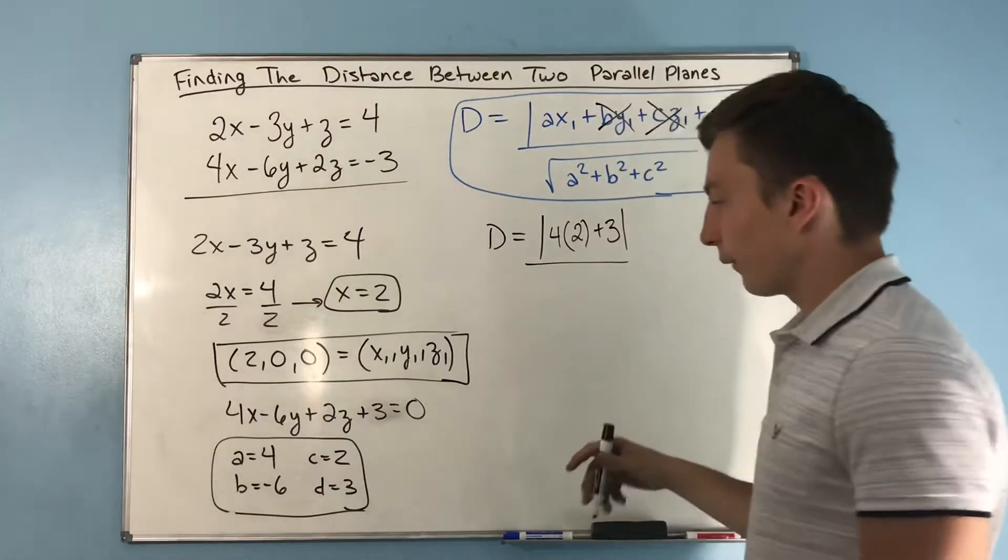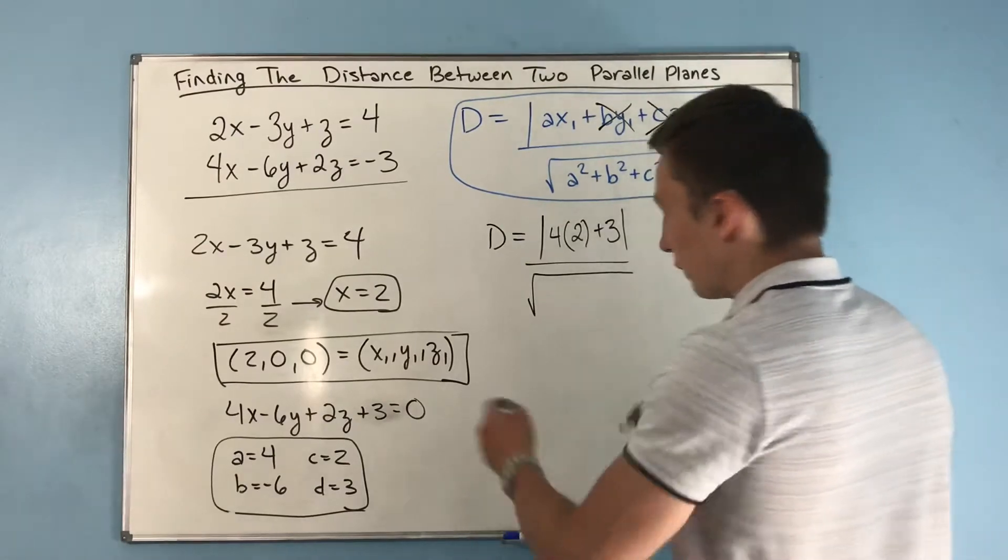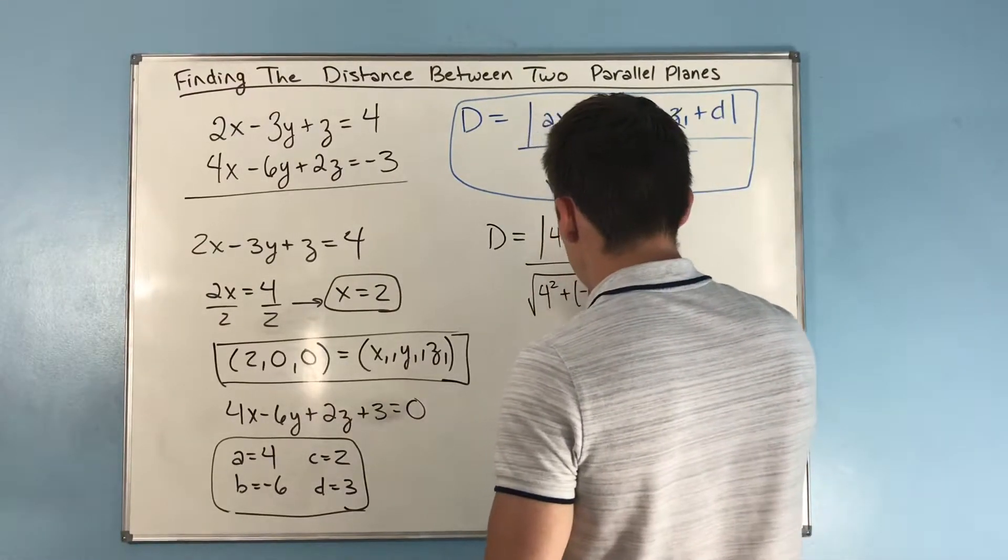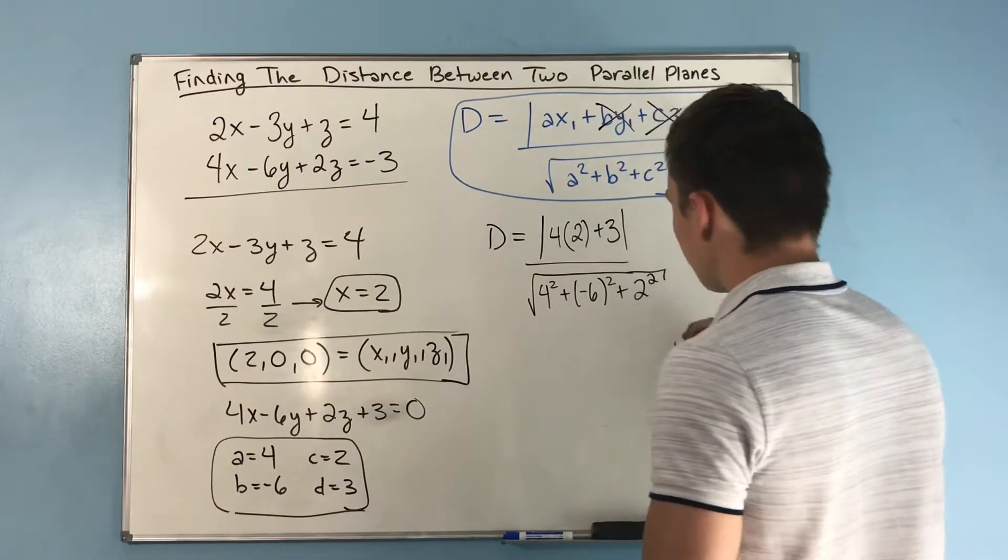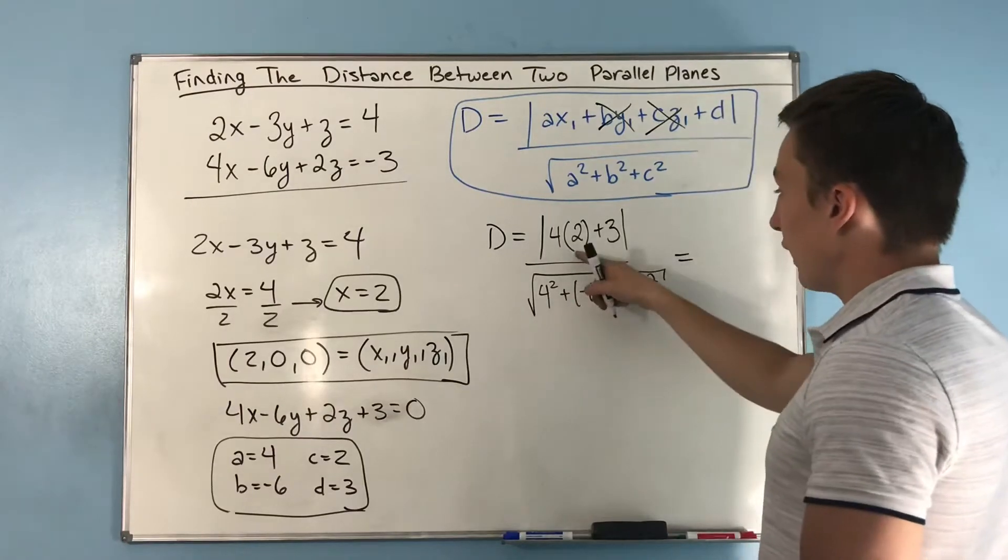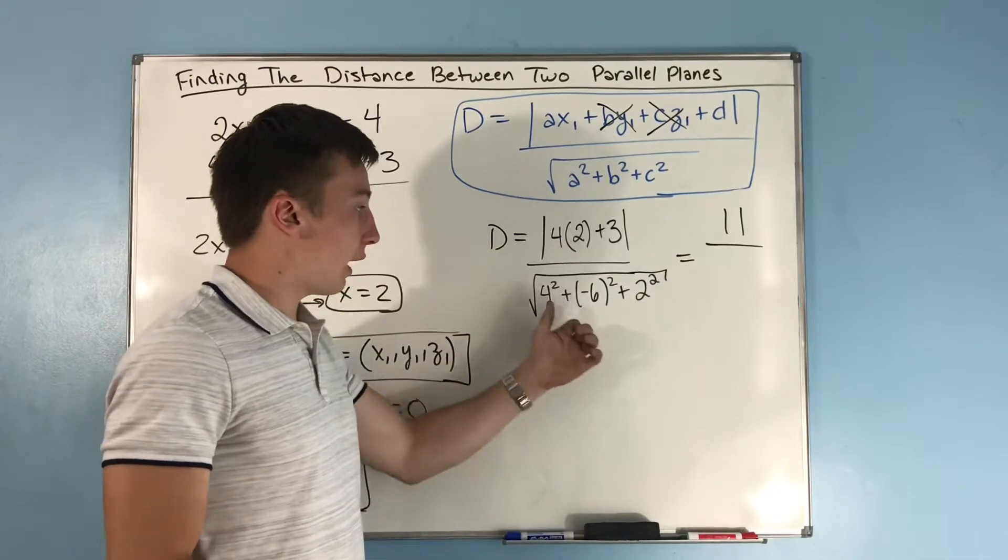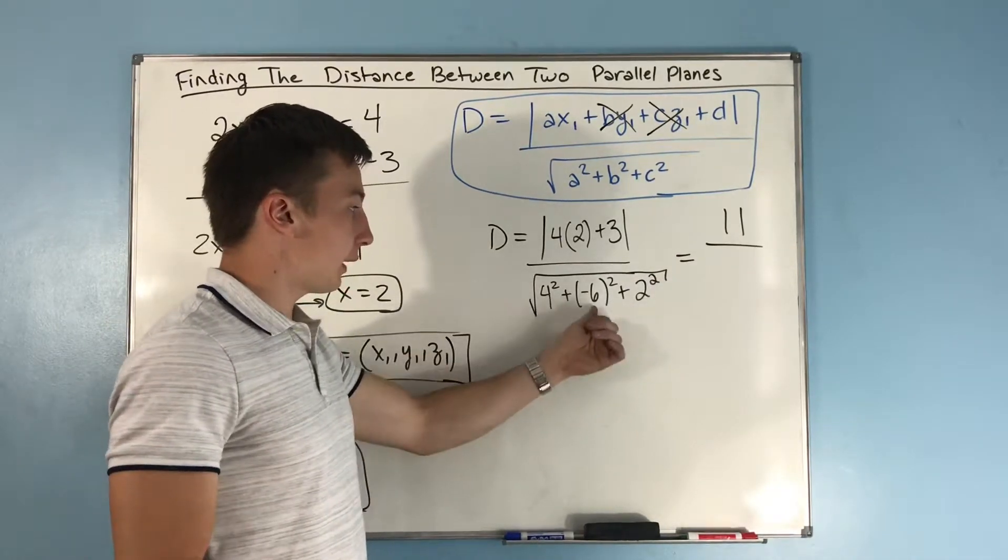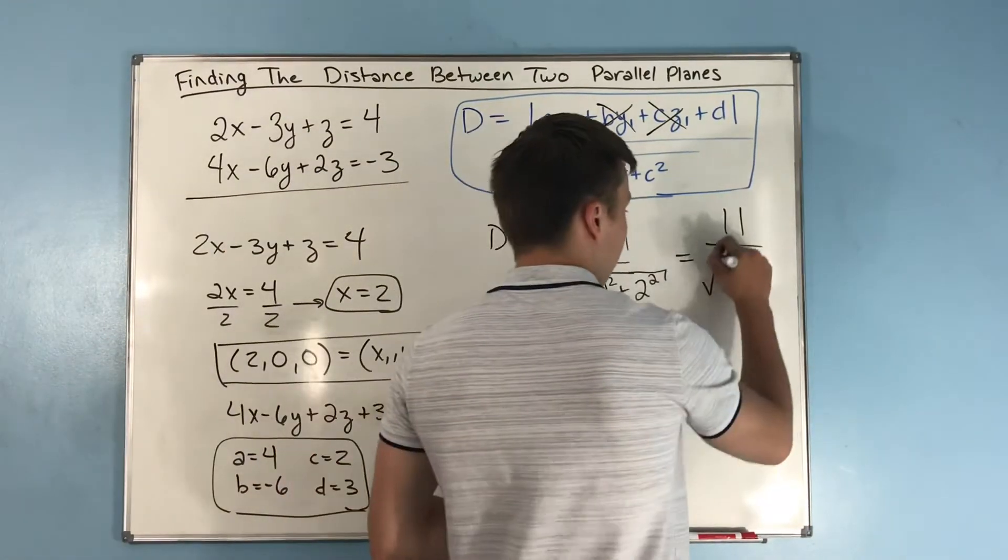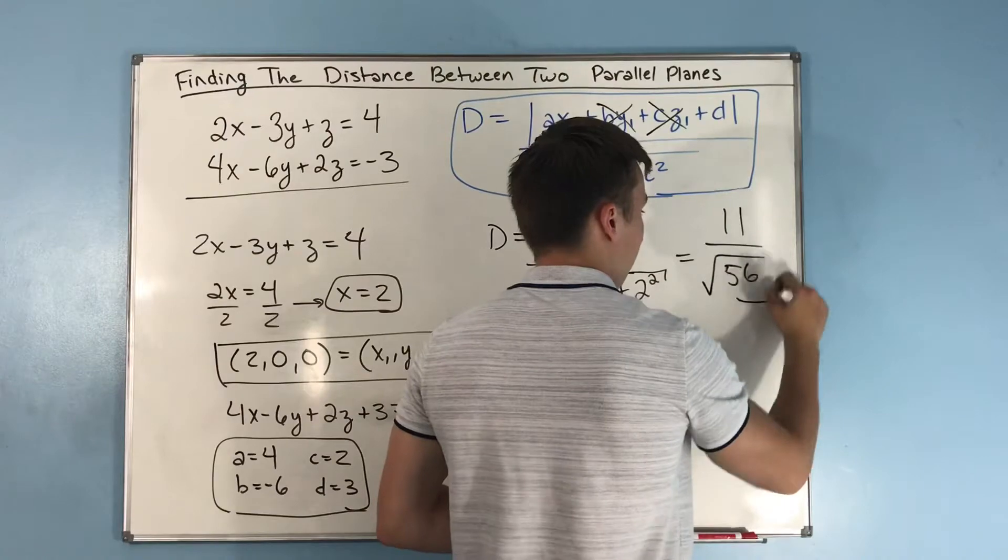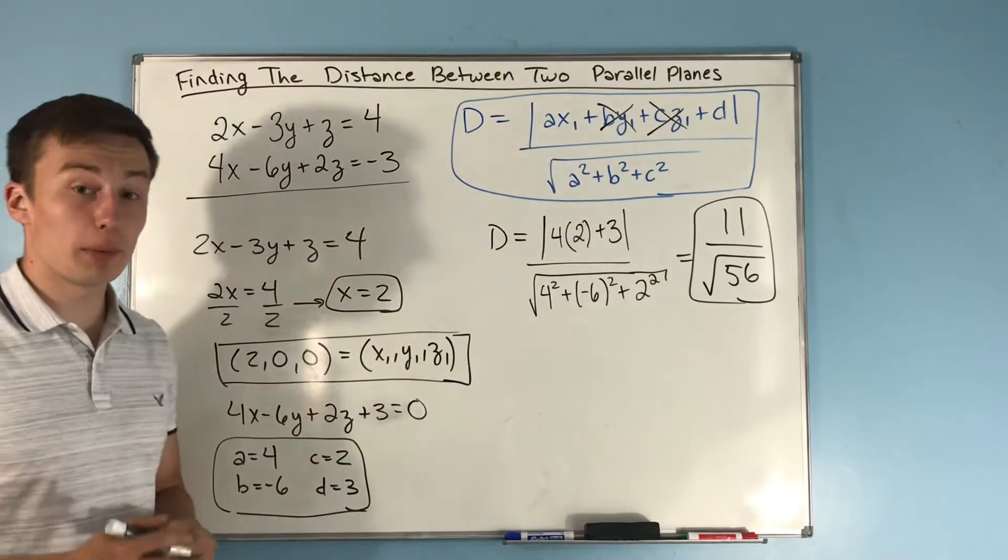Then we put this over the square root of a² + b² + c², which is 4² + (-6)² + 2². That equals, we have 8 + 3 which is 11 in the numerator. The denominator is √(16 + 36 + 4), which equals √56. That is the distance between these two parallel planes.